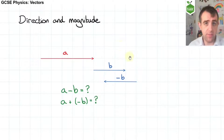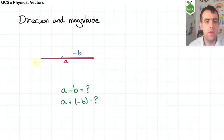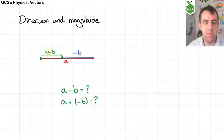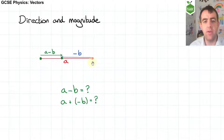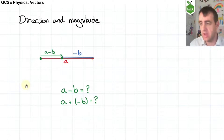In the previous example, we started the second arrow at the end of the first arrow, so we do exactly the same thing here. You can see a starts here, moves to here, and then we add minus b to it — it brings us back to here. And so a minus b is this small arrow here. If a was a vector to the right that is 5 long, and b was a vector to the right that was 3 long, then a minus b is a vector to the right that is 2 long, and you can see that in this diagram.